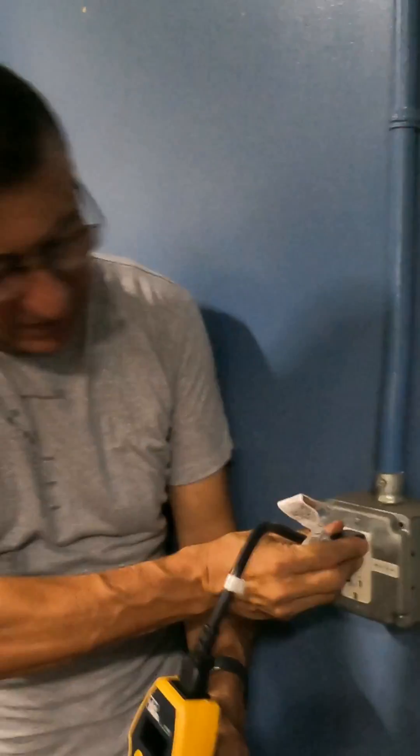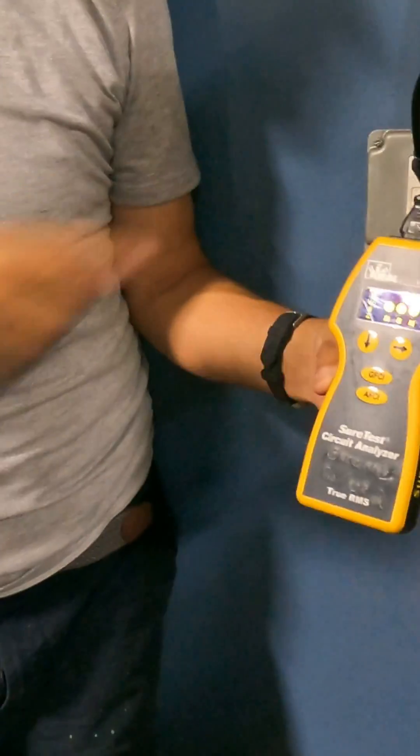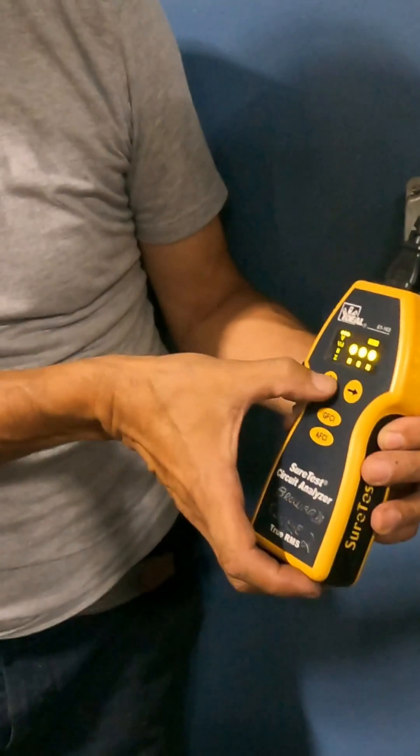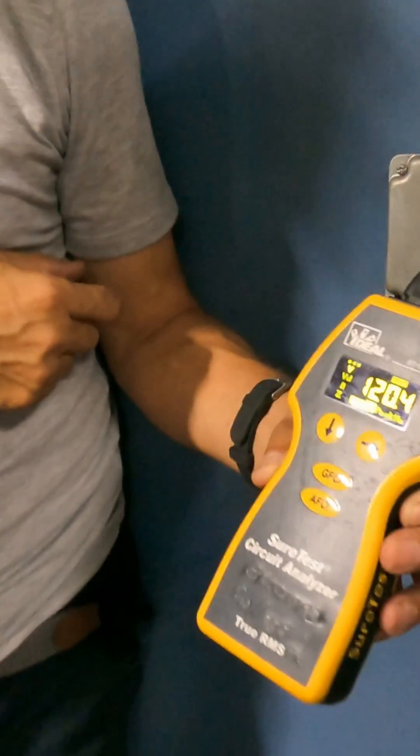Look at this. I am going to connect the SureTest. It says that the hot, neutral, and ground are properly wired in this outlet - you see they are solid: hot, neutral, and ground. Okay, I am going to check voltage. 120 volts 0.4, that's good.